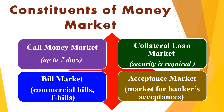The second constituent is the collateral loan market, which refers to a market for loans secured against collateral securities. The securities can be in the form of stocks or bonds. The collateral security is returned to the borrower when he repays the loan. However, if the borrower fails to repay the loan, the collateral becomes the property of the lender.